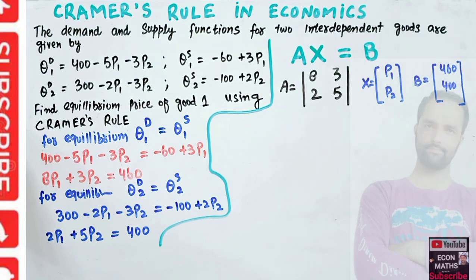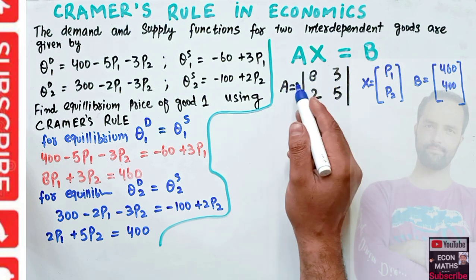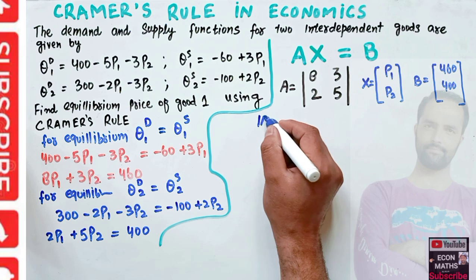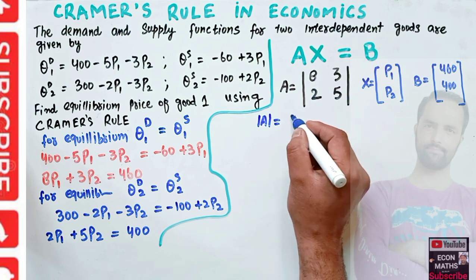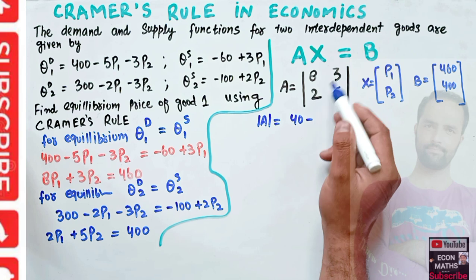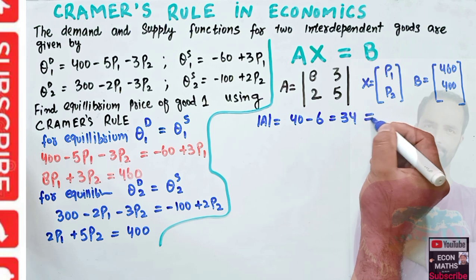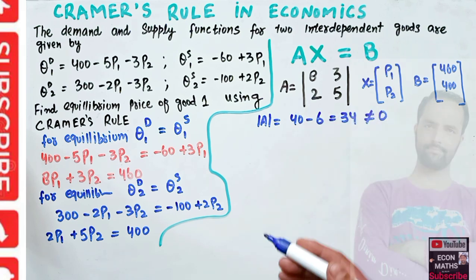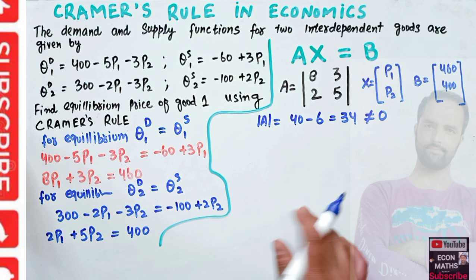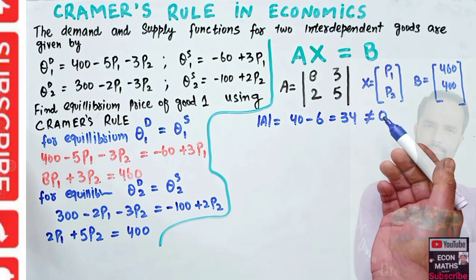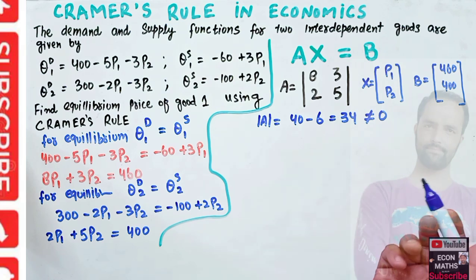To apply Cramer's Rule, we first take the determinant of the coefficient matrix A. The determinant is (8 × 5) − (2 × 3) = 40 − 6 = 34. Since it is not equal to zero, the system is feasible and we can proceed to find a solution.